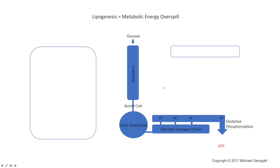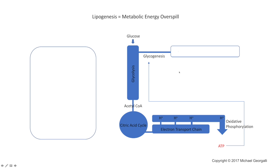In order to produce glycogen, we enter into a new metabolic pathway called glycogenesis, which requires ATP. Recall that glycogenesis is an anabolic process, and anabolic processes require energy. So some of that glucose will be converted to ATP to facilitate the remainder of that glucose being converted into glycogen — an energy-rich storage material within cells.